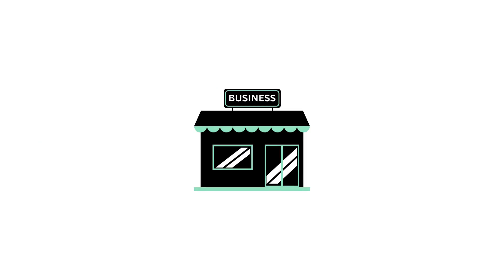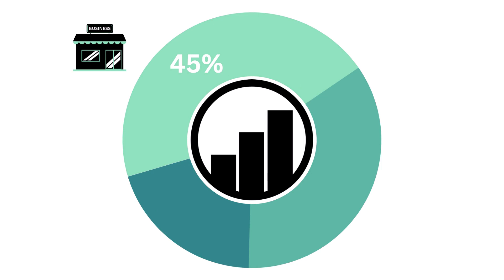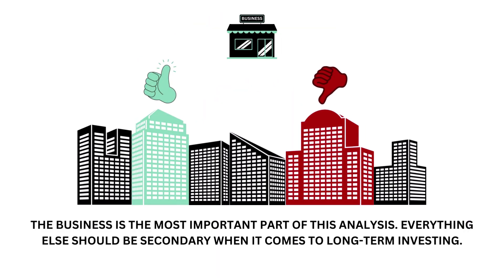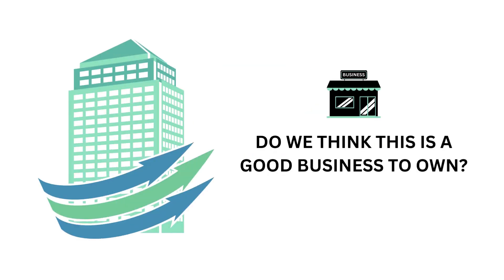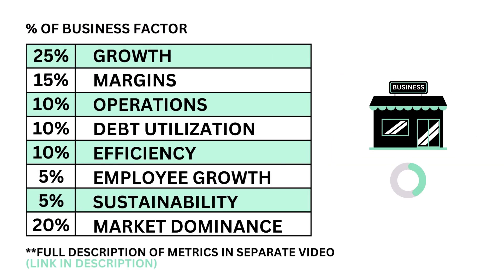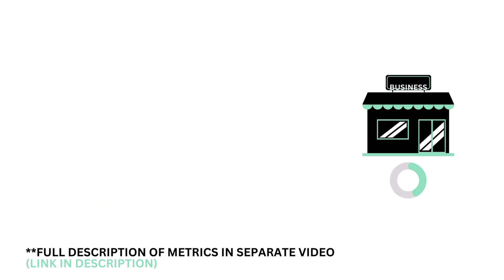Let's look at the company's business. The business factor accounts for 45 percent of the analysis. The business is the most important part—everything else should be secondary when it comes to long-term investing. The question we want answered is: do we think this is a good business to own? The business is made up of eight metrics from growth, efficiency, to market dominance, each weighted based on importance.